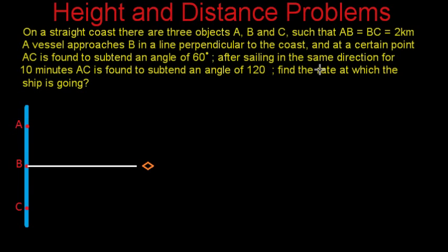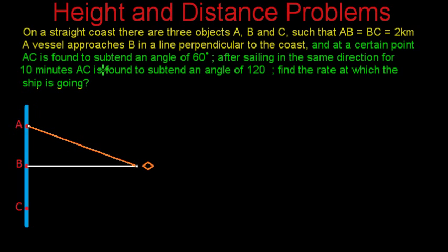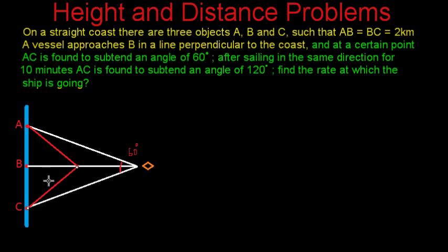At a certain point, AC is found to subtend an angle of 60 degrees on the vessel. That means if the vessel is at a certain position and we join A and C with lines to that point, this complete angle is equal to 60 degrees. And after sailing in the same direction for 10 minutes, AC is found to subtend an angle of 120 degrees — meaning when the vessel reaches its new position, this complete angle equals 120 degrees.